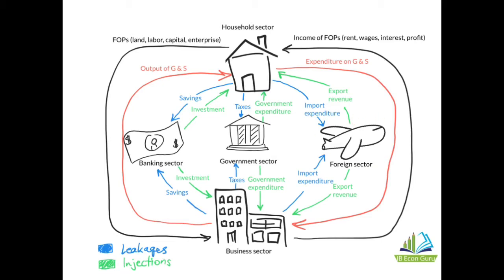The households are the owners of the factors of production. What they do is sell the factors of production — land, labor, capital and enterprise — in resource markets. The business sector employs those factors of production and in return pays income for their use. Land receives rent, labor receives wages, capital receives interest, and enterprise receives profit.